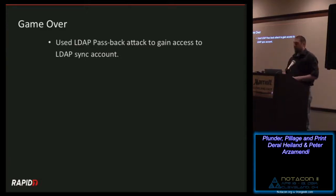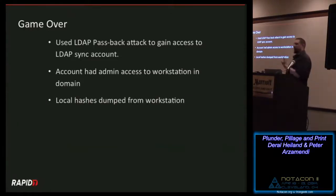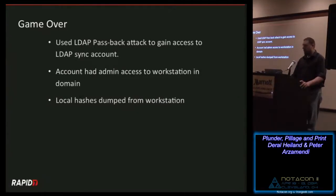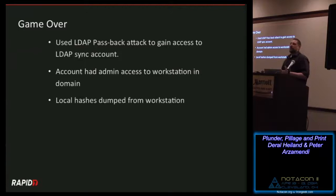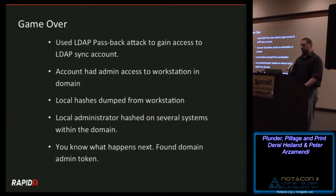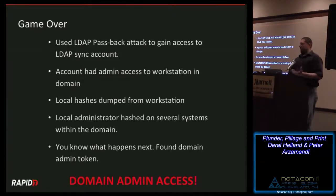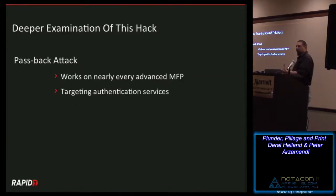We ended up automating a lot of this in our tool, PRADA. Once I got the accounts, I found the account had access to a workstation. From there, it's the same song and dance: dump the local hashes, see if those hashes work somewhere else, exploit trust relationships. Printers can be used to violate trust relationships between organizations. That local administrator account was found on other systems, and eventually we found a system with a domain token — bam, domain access. All started from a printer that somebody uses just to send emails.